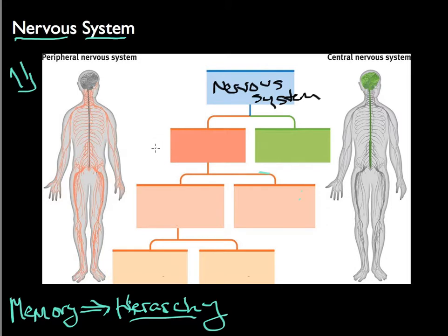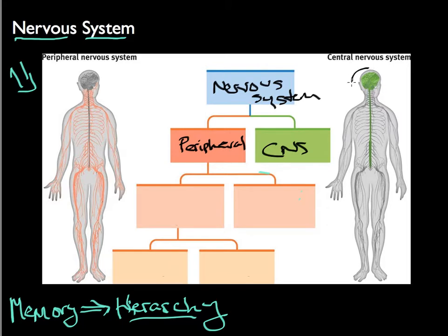You have two major components of the nervous system itself: the peripheral, pictured on your left, and the central nervous system, or CNS. The CNS is essentially composed of the brain and the spinal cord — that is it. And the peripheral is pretty much everything else.